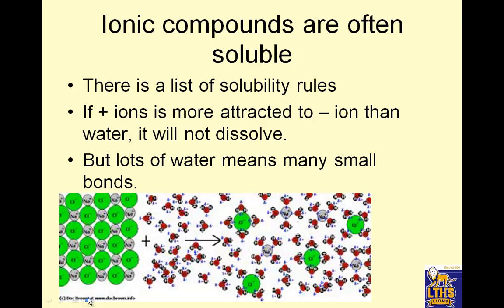Ionic compounds are often soluble. There's a list of solubility rules you'll get in class. If positive ions are more attracted to a negative ion than water, it will not dissolve. But lots of water means many small bonds. Would you rather have one strong bond to sodium or like quadruplets who aren't quite as good looking?